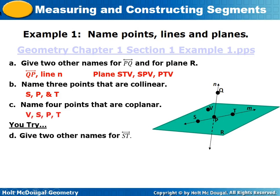Now you try. This first question says give two other names for line ST. When we look at line ST, there are actually multiple other ways to name it. We could obviously flip the letters to TS, but we could also name it SP, PS, TP, or PT — still the same line. Our last way would be line M. Just any two points that are on that line.